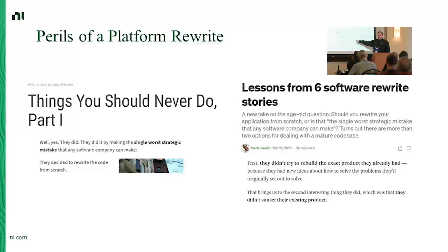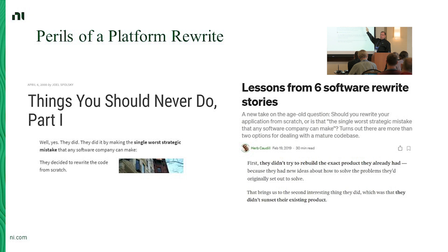When he was asked later, 'but you said never do this,' he said: okay, there are two key things I'll clarify. It's sometimes okay to do this. There are six lessons learned from people who started over and sometimes that works out. When you distill down what works, there are two things: one, they didn't try to rebuild exactly the same product they had — they might be solving the same problem, but they were actually building a different product. And second, they didn't sunset their existing product. For LabVIEW and NXG, we were trying to do both of those things — reinventing the wheel, replacing the existing product, and adding new stuff. It was a lot of 'and and and' and it just kind of grew.